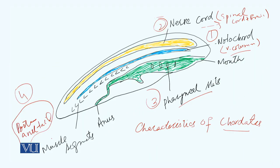Here you are seeing a diagram on the screen, which highlights the specific characteristics of chordates. The first characteristic is the presence of notochord. Notochord is on the organism's dorsal surface.